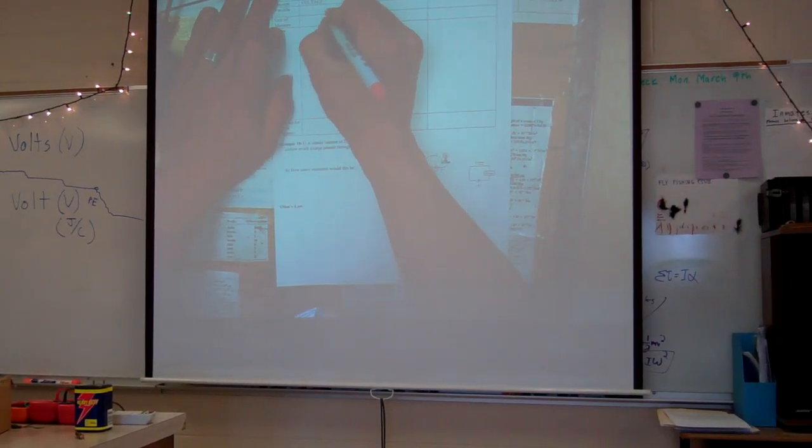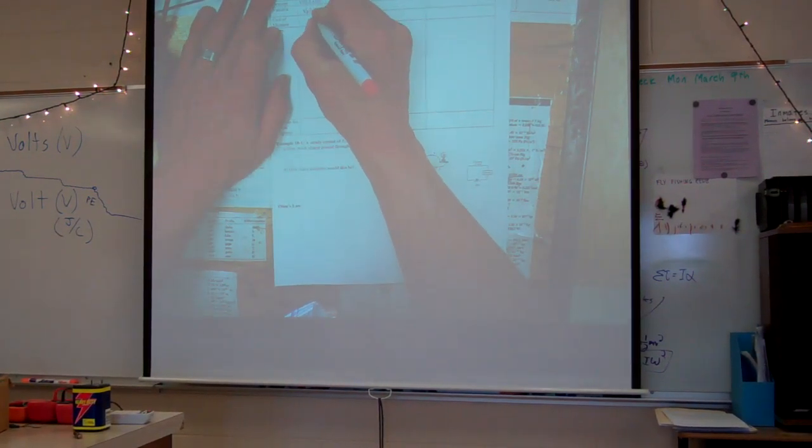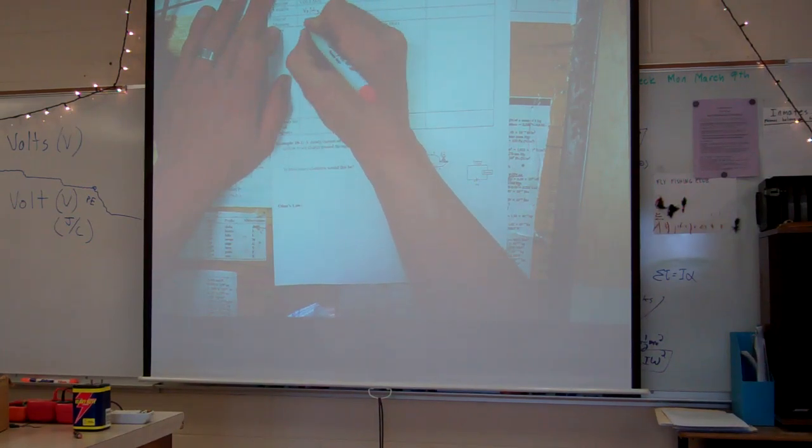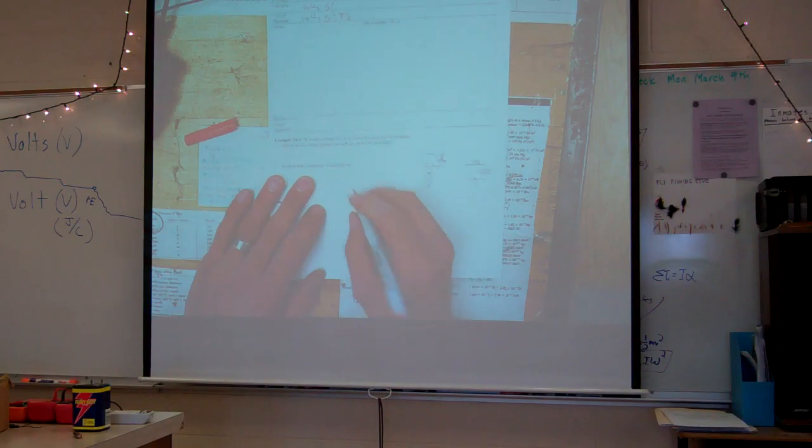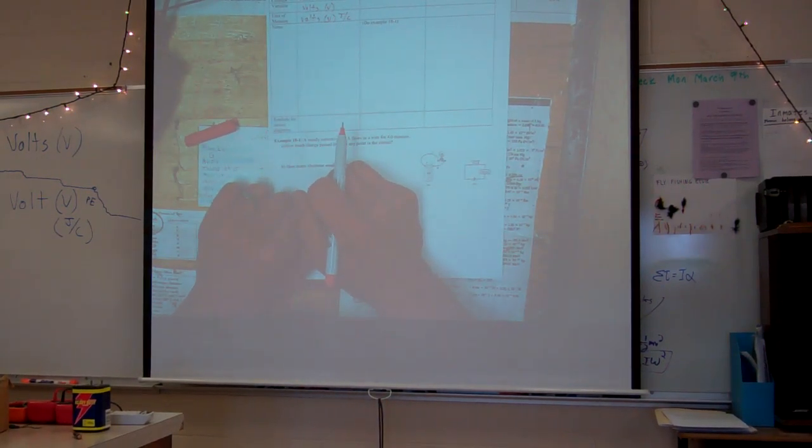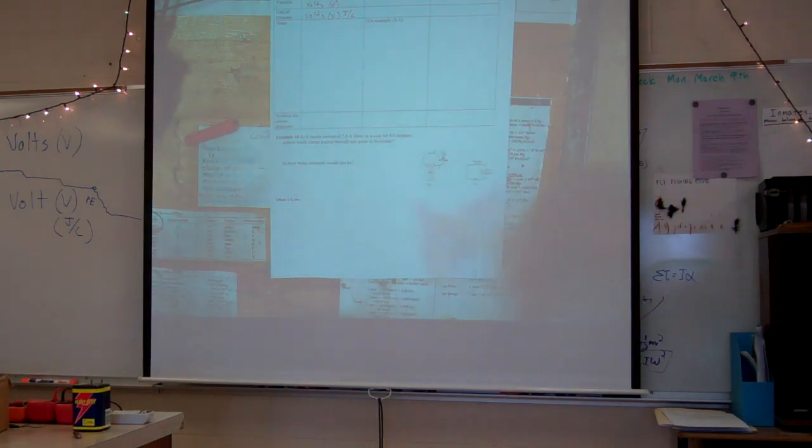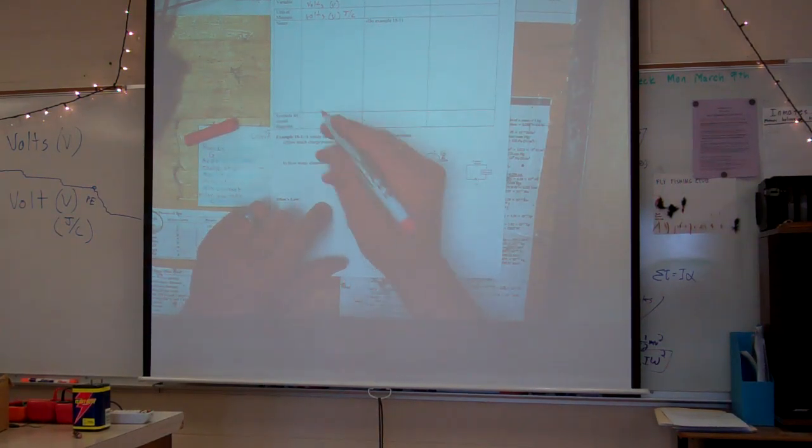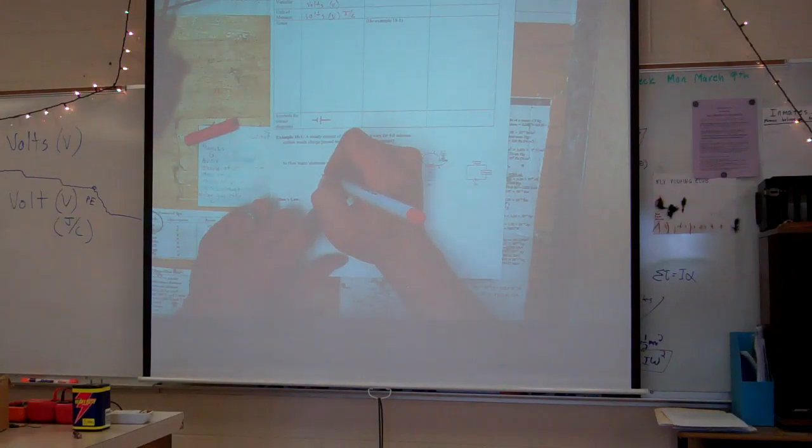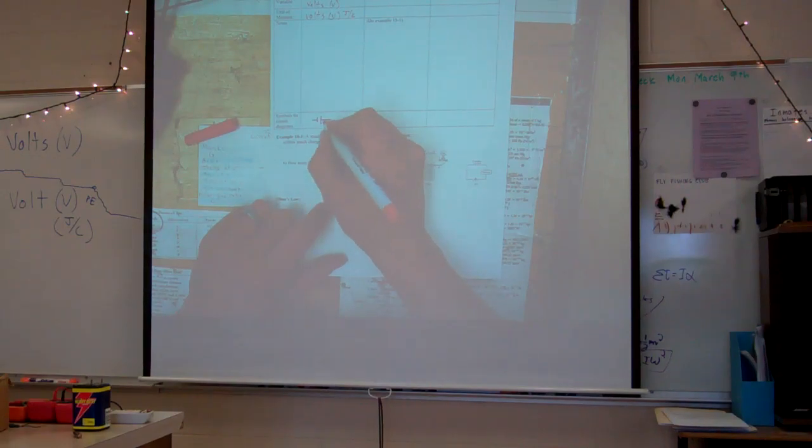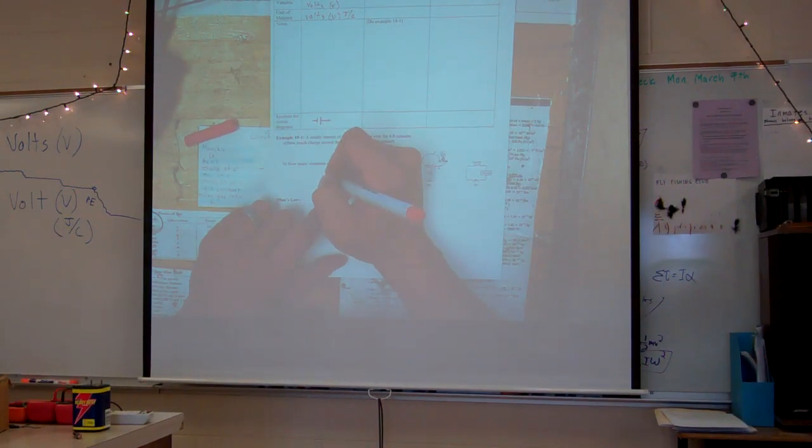So let's summarize here. Variable: volts. Unit of measure: also volts. Joules per coulomb. Now we're going to be drawing these in circuits. We're going to be doing circuit diagrams. We don't like to draw a battery. So what we do is this. That is the battery symbol.